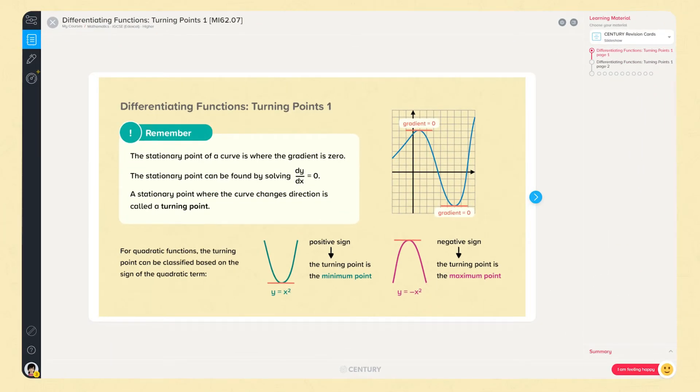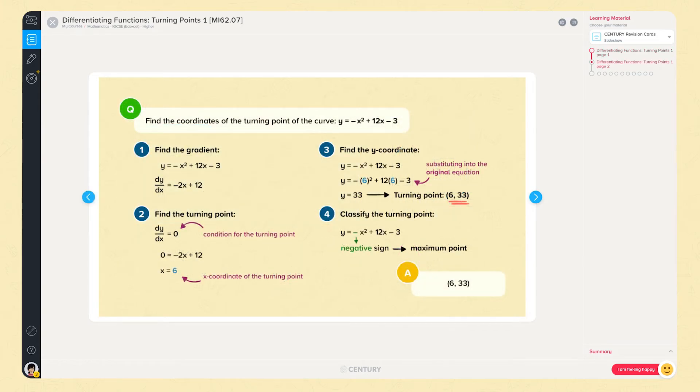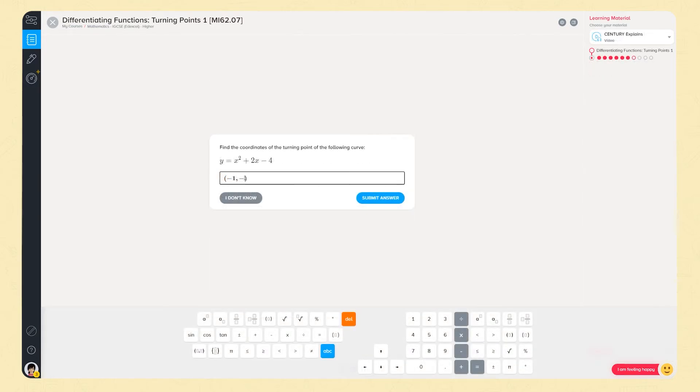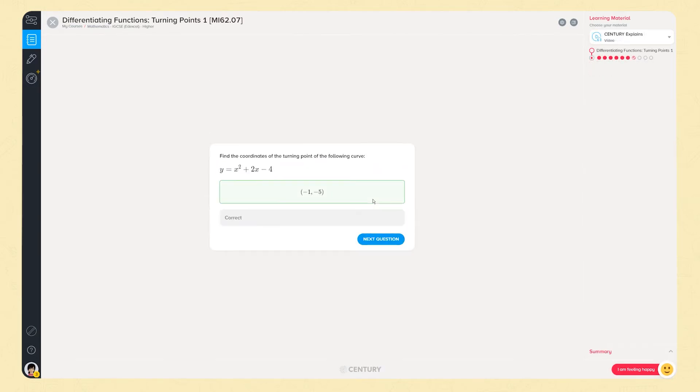Learners who will progress on to further study in maths can access our Bridge to A Level course, which provides a great foundation for beginning year 12 by consolidating key number, algebra and coordinate geometry skills and introducing new topics such as calculus.